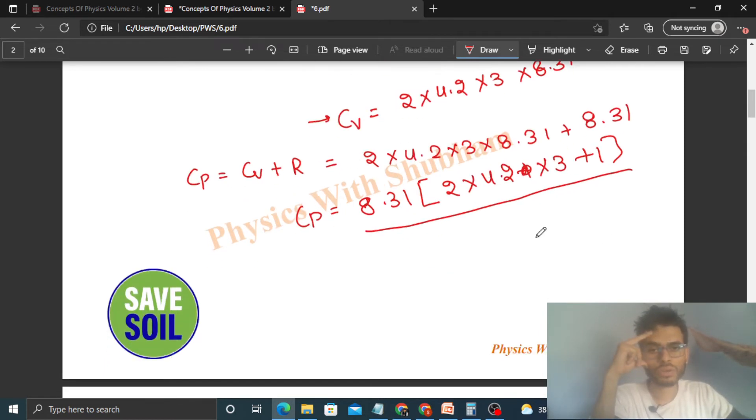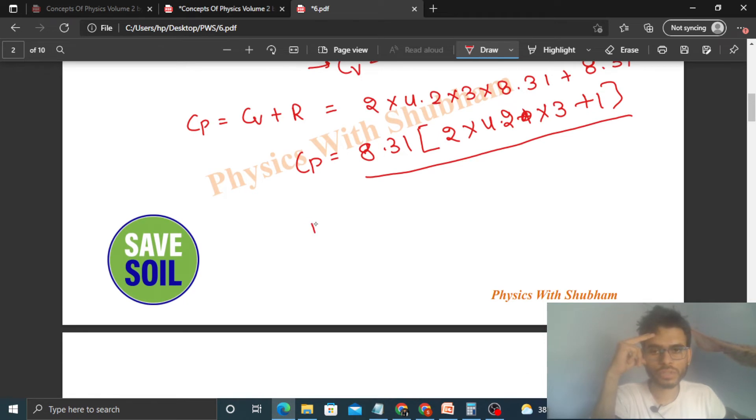Now we need to discuss the isobaric process. In isobaric process, the pressure is constant. So heat supplied in isobaric process that will be N Cp delta T. We need to find out Q's value for which increase in temperature delta T that will be 1 degree Celsius. How much heat we need to supply at constant pressure so that the gas temperature increases by 1 degree Celsius?